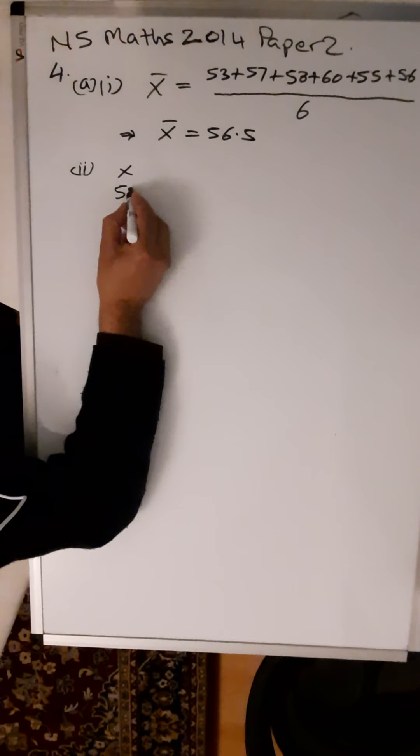And 0.5. Now you're going to square all of these results. Square of 3.5 is 12.25. Squaring 0.5 gives you 0.25. Squaring 1.5 gives you 2.25.